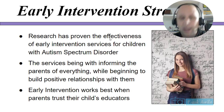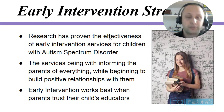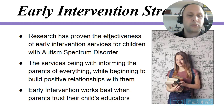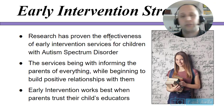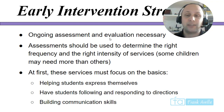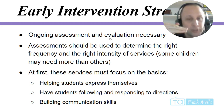Early intervention services begin with informing the parents of everything and building positive relationships with them. Parents of ASD children have it very difficult, and you want parents as an ally. Early intervention works best when parents trust the child's educators — honesty is always the best policy. Ongoing assessments and evaluations are necessary to determine the right frequency and intensity of services. Some children may need more services than others, and you want to match intensity to the severity of ASD.